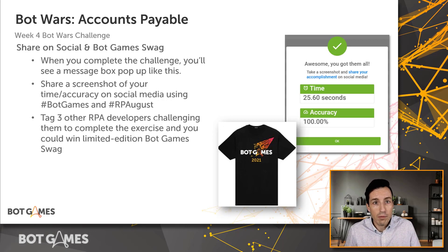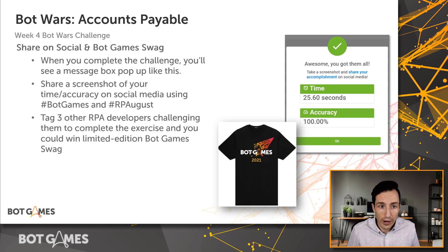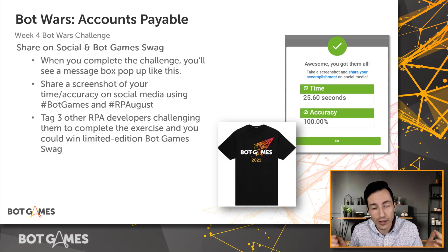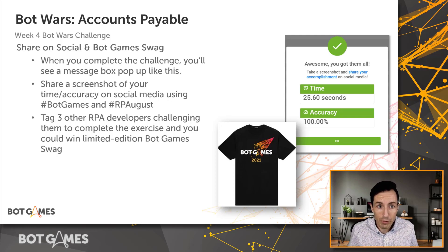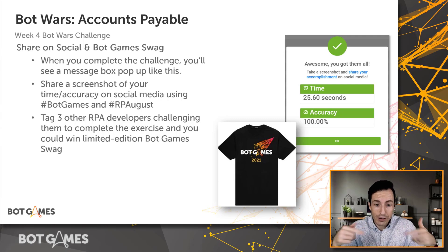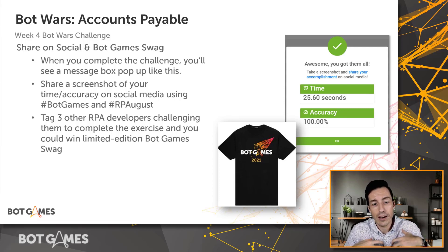Not only is doing it multiple ways great for the individual — because they've learned different packages and skills they can take to real processes they're trying to automate — but by sharing, they've helped spread that knowledge with everyone in the developer community. As an RPA developer, you want to have a checklist in your head: you can try recorder, web automation, keystrokes, app integration. When something works you move on; when it doesn't, you try the next thing. That's how you become a really solid RPA developer.